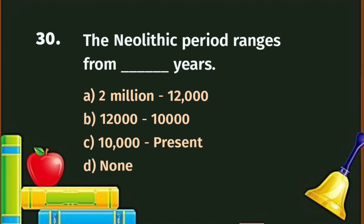Question number 30. The Neolithic period ranges from how many years? A. Two million to twelve thousand, B. Twelve thousand to ten thousand, C. Ten thousand to present, D. None. The correct answer is C - ten thousand to present.